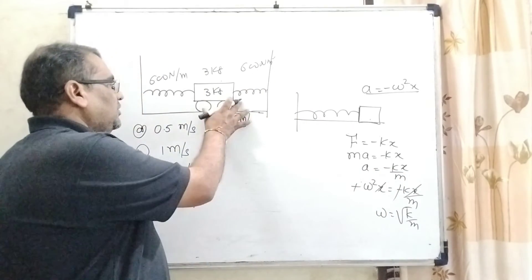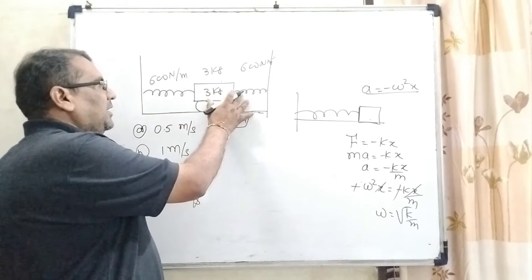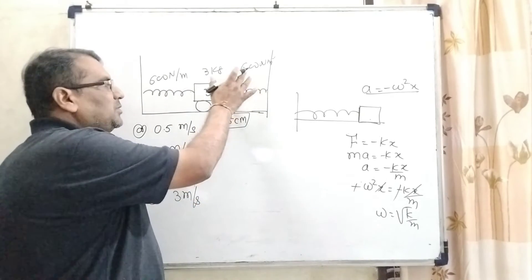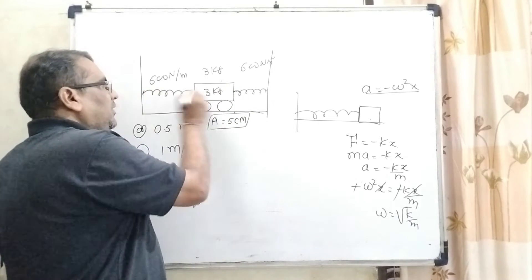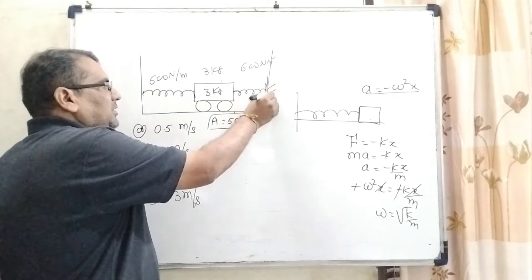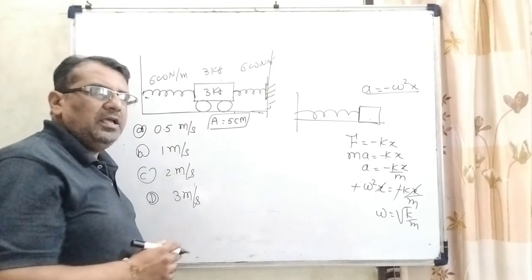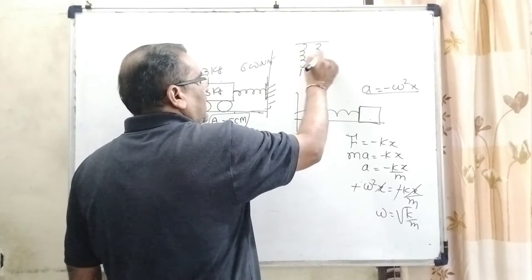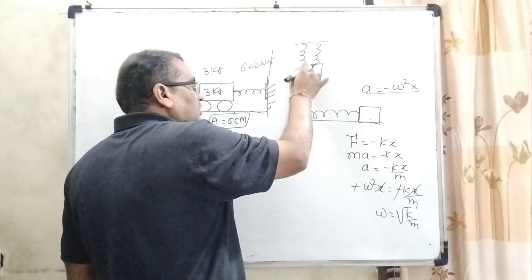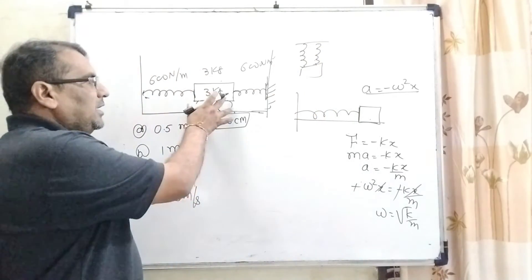But in this case, you can see that two springs are connected with the same spring constant k. But here, there are different rigid bodies. So therefore, we can say that it is parallel. Because in this type of arrangement, you can see they are not connected to each other. They are connected with the same body. So therefore, we can say that it is parallel.